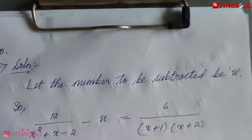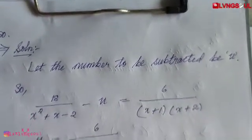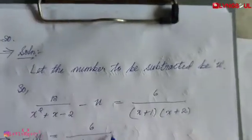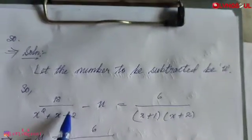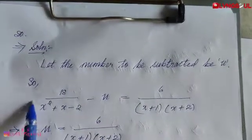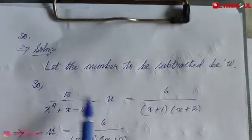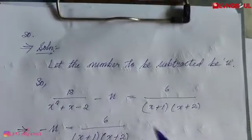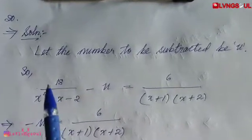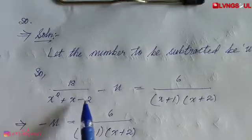Equal to x plus 1 into x plus 2. This is what we are going to do. Using additive identity, we set up: 18 by x squared plus x minus 2 minus U equals 6 by x plus 1 into x plus 2.